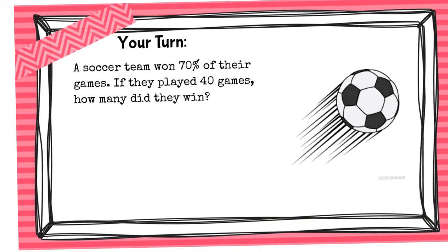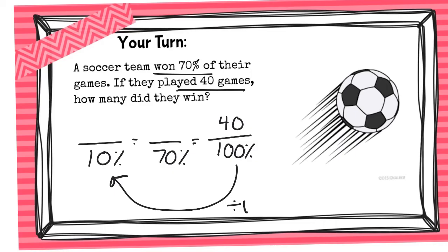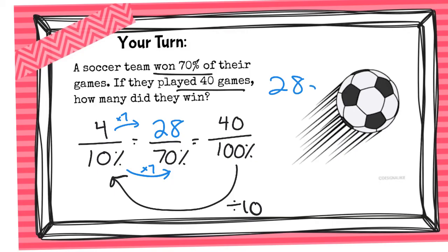Now it's your turn. A soccer team won 70 percent of their games. If they played 40 games, how many did they win? Let's go over it: 100 percent would be all of their games, which is 40. We are trying to get to 70 percent, but there's not that direct line, so I would recommend dropping down to 10 percent. To go from 100 percent to 10 percent, you divide by 10, so 40 divided by 10 is 4. Then go from 10 percent to 70 percent, which is times 7, so 4 times 7 is 28. They won 28 games.